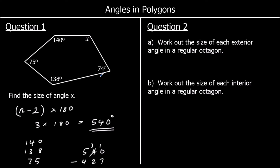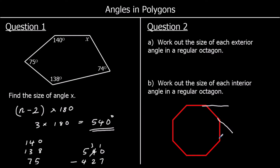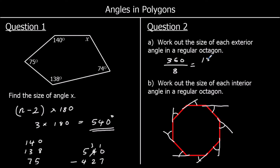Question two: work out the size of each exterior angle in a regular octagon. Here is a regular octagon. An exterior angle is on a straight line with an interior angle. Exterior angles always add up to 360 degrees — all those angles go the whole way around the shape and make 360. So 360 divided by 8 angles is the same as 180 over 4, or 90 over 2, which is 45 degrees.